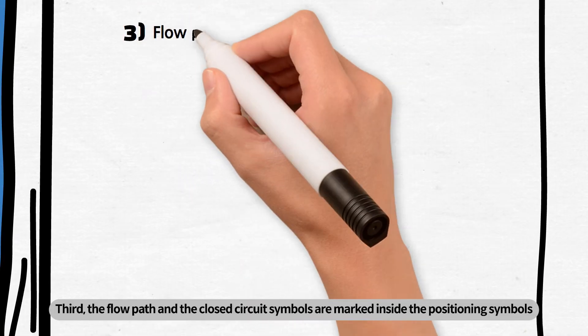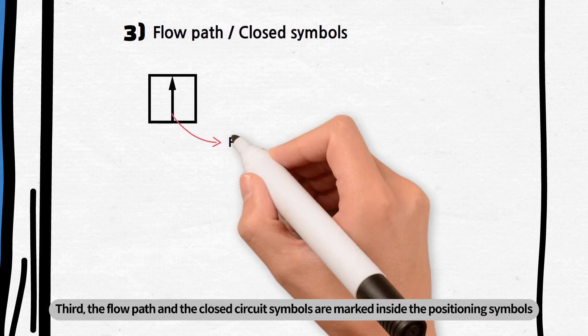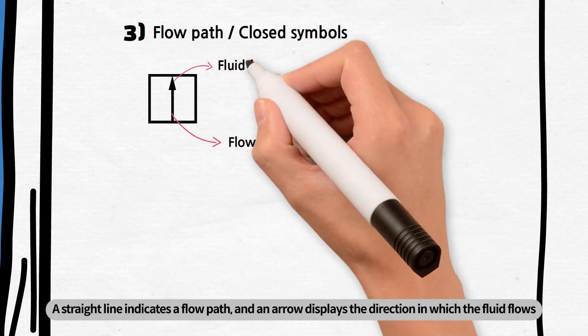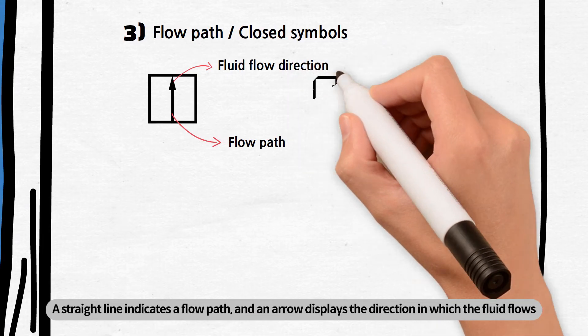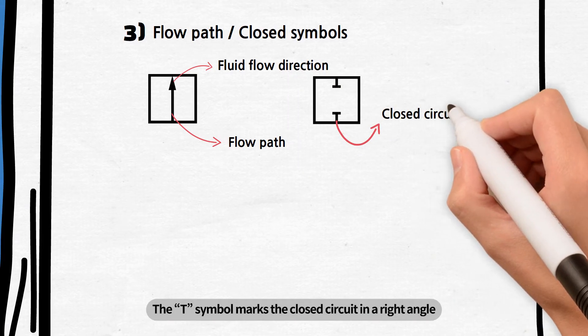Third, the flow path and the closed circuit symbols are marked inside the positioning symbols. A straight line indicates a flow path and an arrow displays the direction in which the fluid flows. The T symbol marks the closed circuit in a right angle.